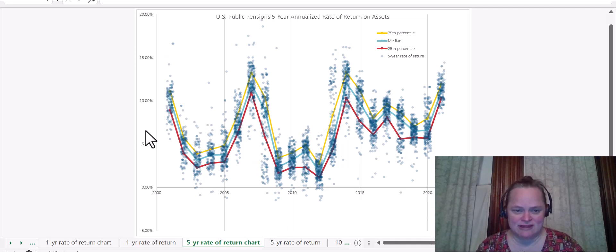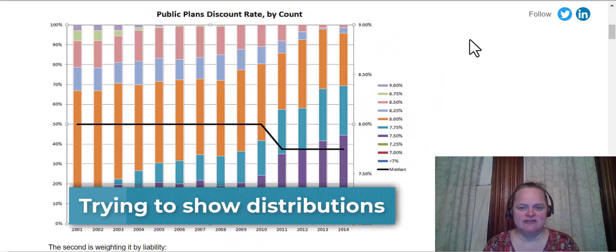So you can see there's all of these dots showing U.S. Public Pension's five-year annualized rate of return on assets, and then there are these line graphs of 75th percentile, median, and 25th percentile. And I'm very happy with how this turned out, so let me take you on a journey of how I got here. These are not exactly the same data sets, but it's the same visualization problem.